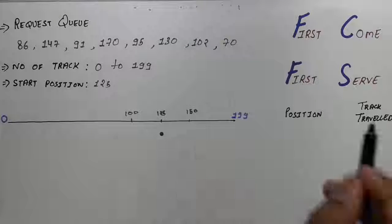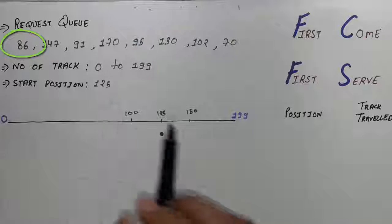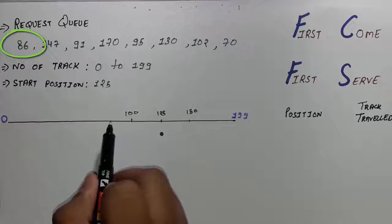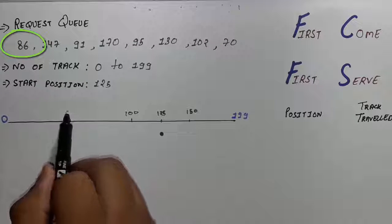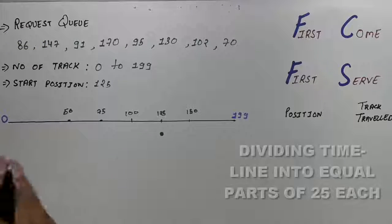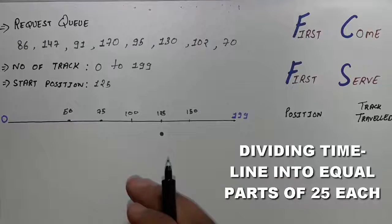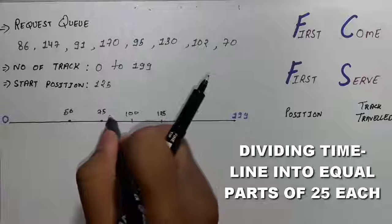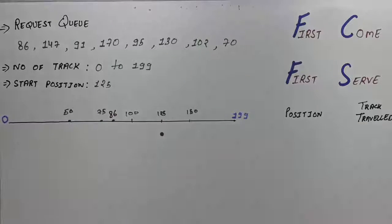Now from 125, the first request is 86. So 86 should be somewhere here because this will be 50 and this will be 75. We are just dividing the timeline into 25, so the 86 should be here. So we will write 86 and the header will be moved in.